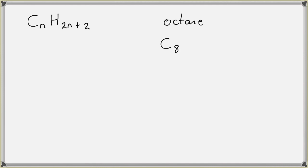So if I want to find the number of hydrogens, I have to go 2 times n, which is 16, plus 2, which means it will be 18. So if you know the general formula, you can look at a name like octane and very quickly come up with its molecular formula to know what it should be made of.